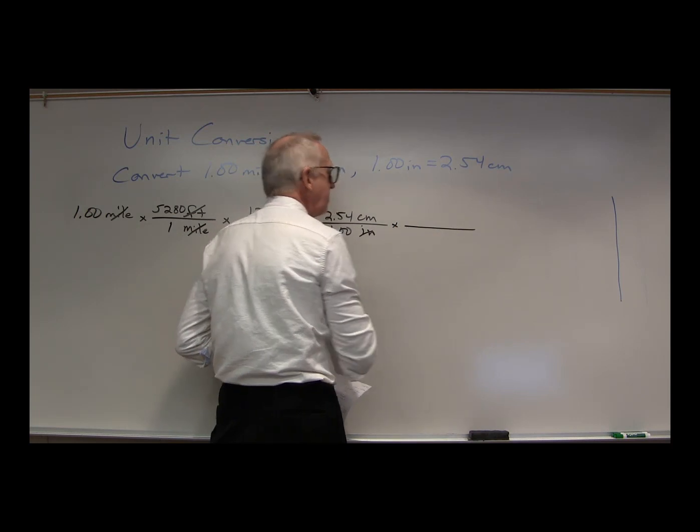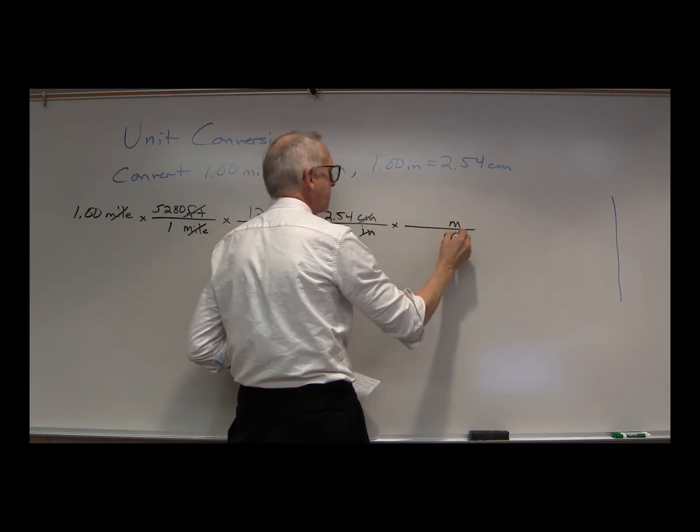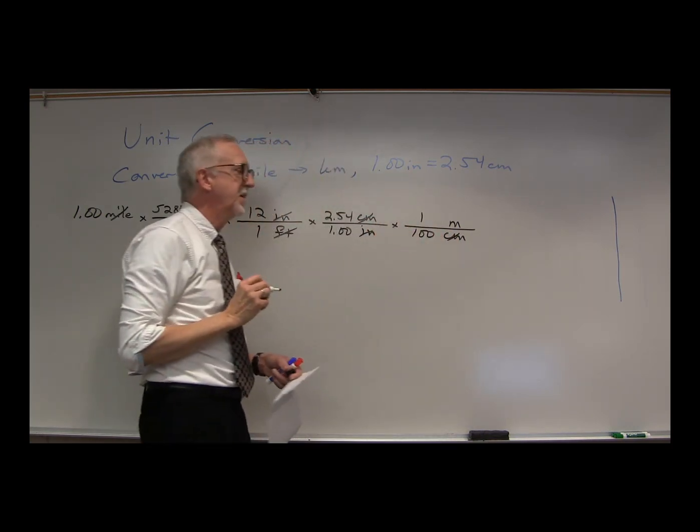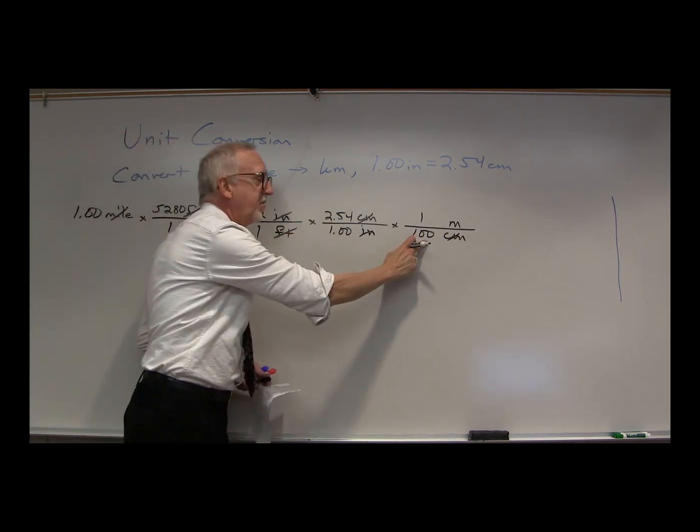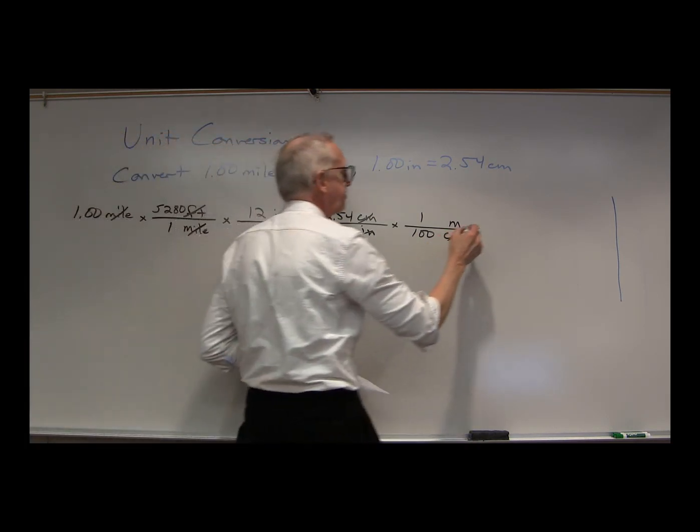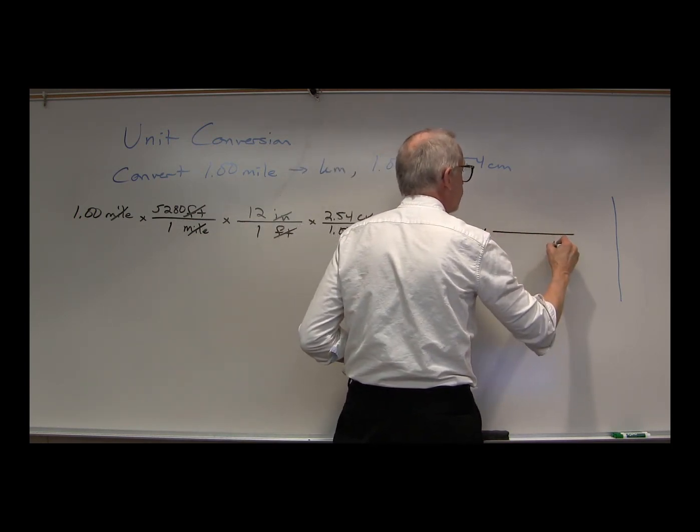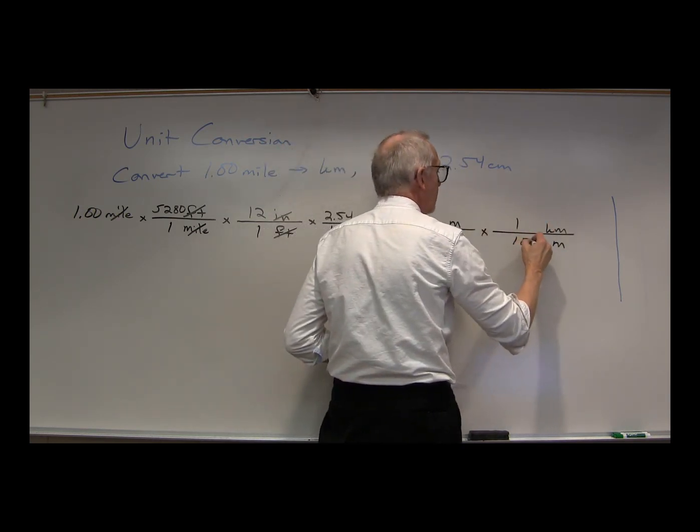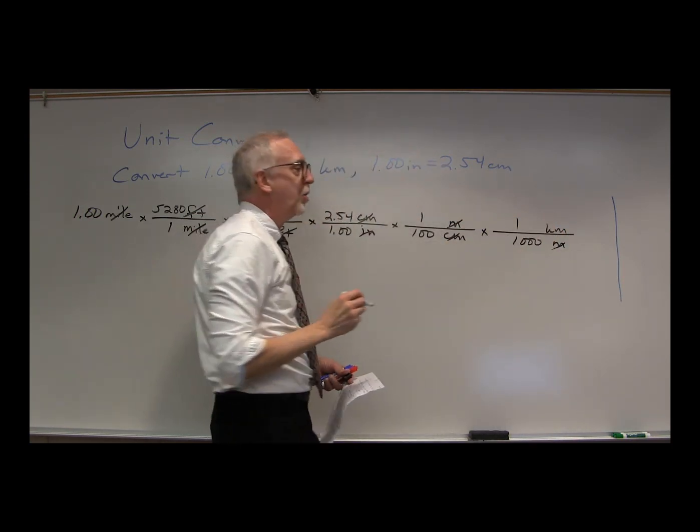Then we'll convert centimeters to meters. So centimeters go on the bottom, meters on the top, so centimeters cancel. What's the conversion? One meter is 100 centimeters. Notice here we've got the number part up on the top, but now we've got the 100 in the denominator. So we've got to be careful with those conversion factors. Then we're going to convert meters, meters on the top, meters on the bottom, to kilometers. What's the conversion? One kilometer is 1,000 meters. The meters cancel. We are left now with kilometers.